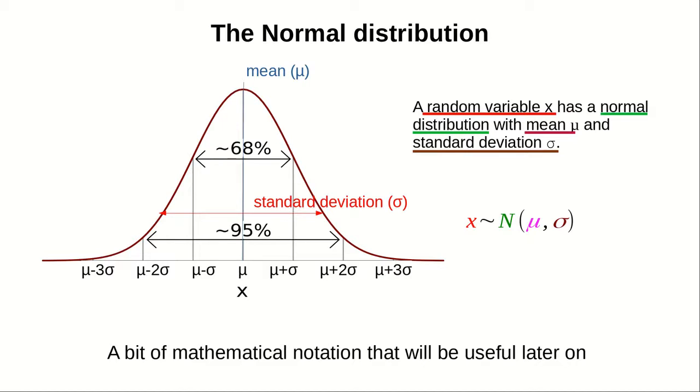A random variable x has a normal distribution N with mean μ and standard deviation σ. That's how we write whether a random variable is distributed normally.